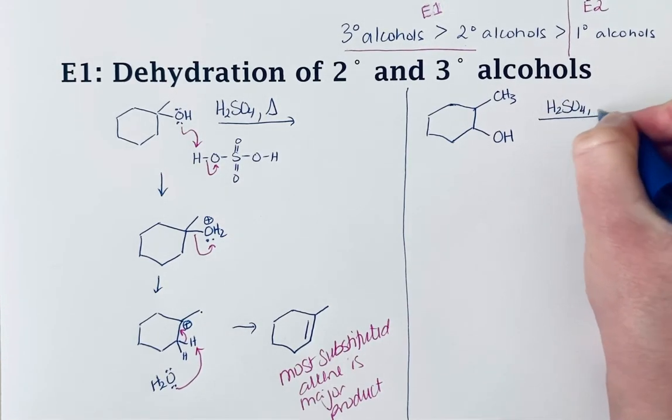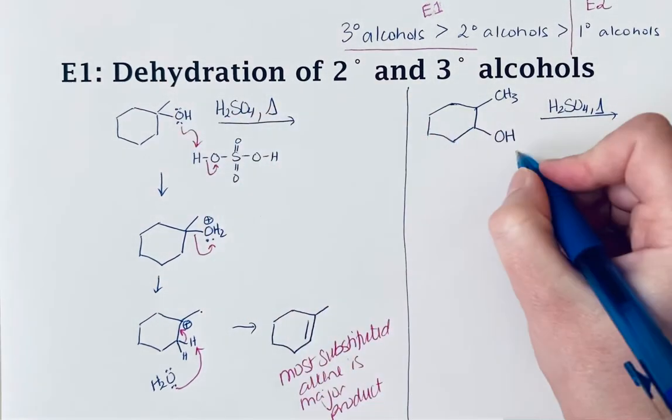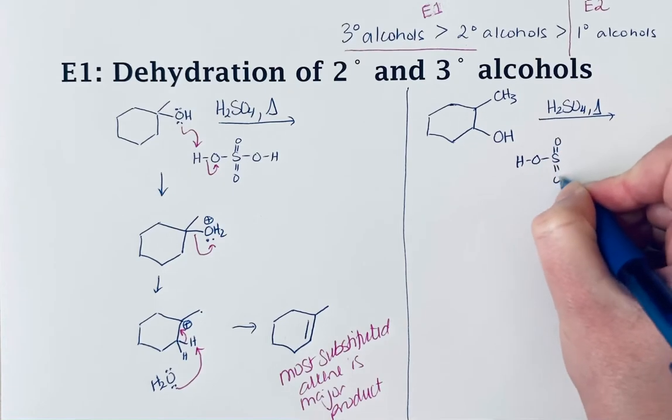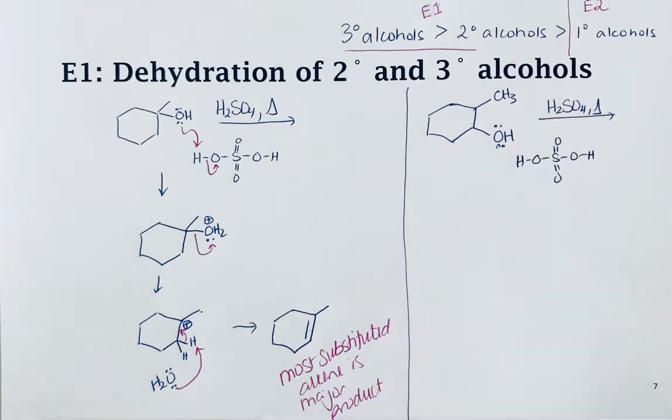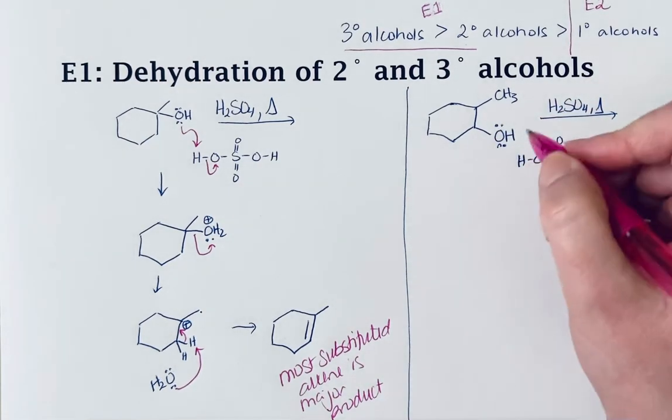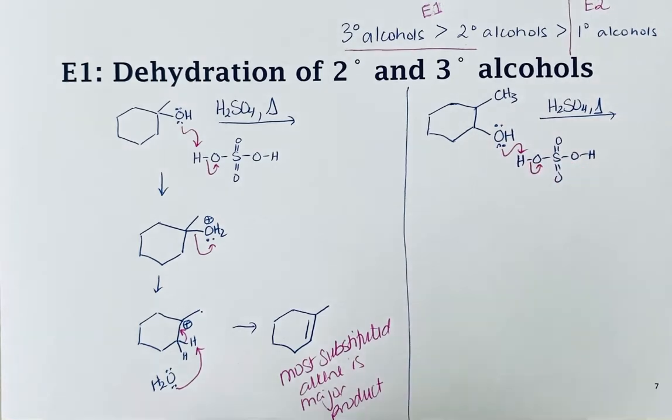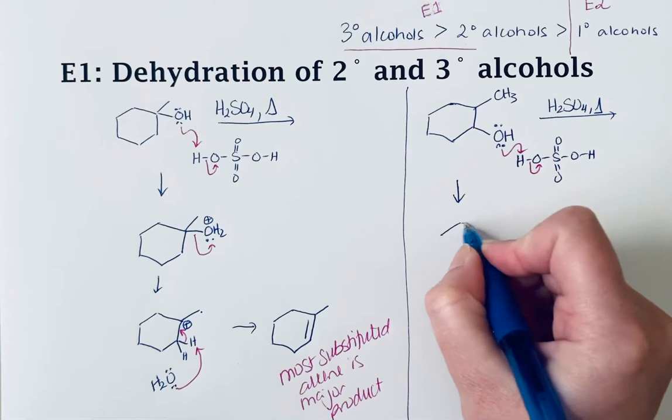The first step is identical: your alcohol reacts with that acidic hydrogen from sulfuric acid. The lone pairs of electrons on the alcohol make it a good base, so we take that acidic proton and break this bond, again converting a poor leaving group into a good leaving group.